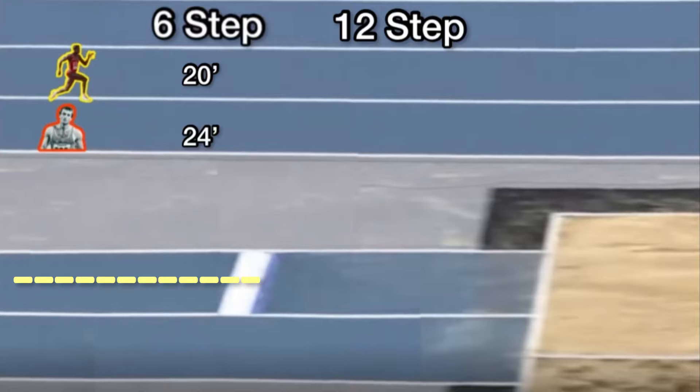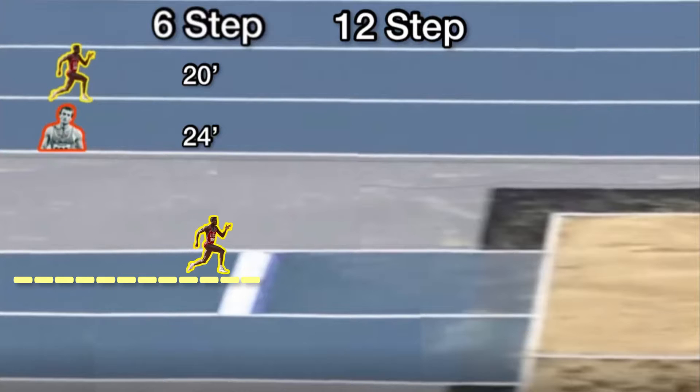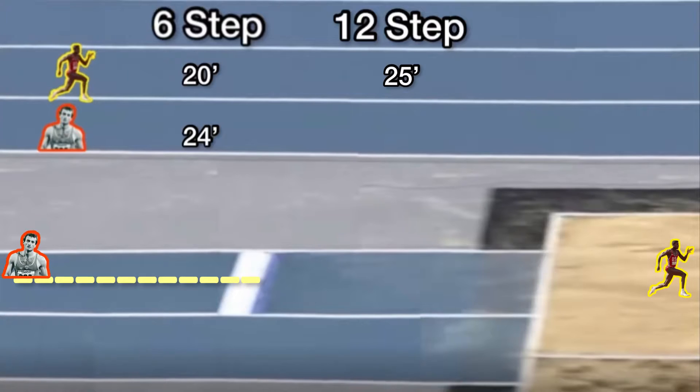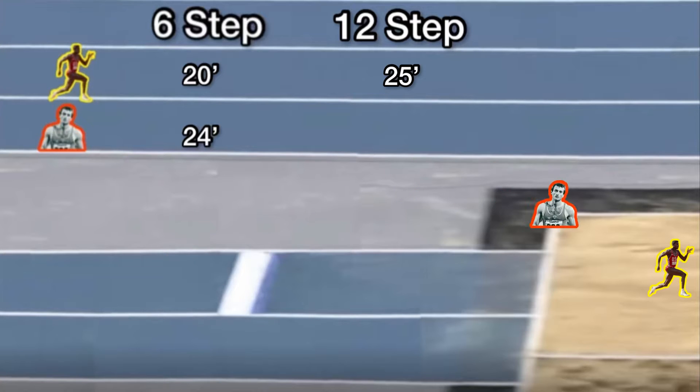Now they go to competition and they both go from a full approach at 12 steps, so they're running further and ideally running a lot faster. The first athlete who only jumped 20 feet now jumps 25 feet — speed was very important for that athlete. The second athlete now jumps 25 feet also, so they didn't jump much further on their longer approach. It seems that speed wasn't as important for that athlete.